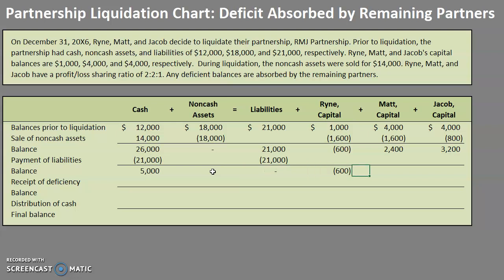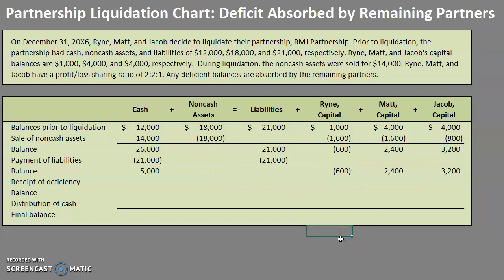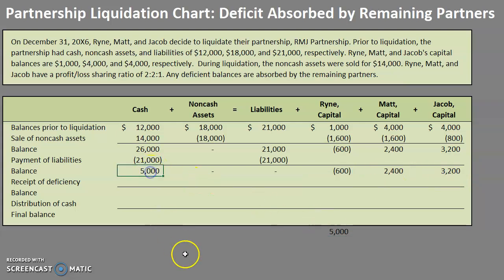We're left with the capital balances. If you want to check, add up the three capital balances and notice they equal the amount of cash on that side. Our equation still balances on the balance lines.